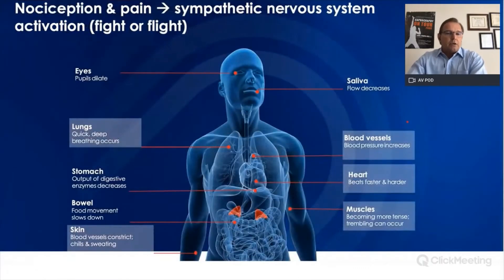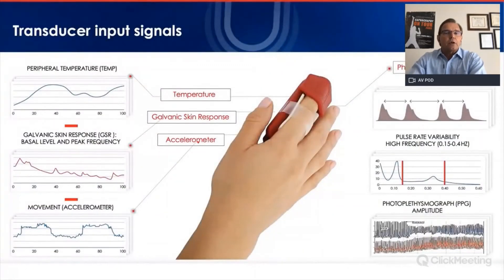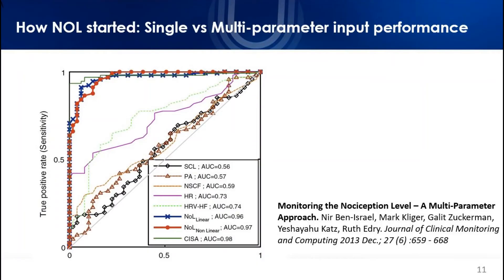Pain and nociception both activate the sympathetic nervous system: pupils dilate, breathing and heart rate increase, blood vessels constrict, sweating occurs, and parasympathetic functions such as gut motility and digestive enzyme secretion are turned down. NOL captures signals from several of these sympathetically activated organ systems. The NOL transducer looks like a bulky pulse oximeter — I call it the Tesla of index finger transducers because it does a lot of cool things. It measures photoplethysmography, galvanic skin response (skin conductance as it changes when the body sweats), and has an accelerometer.